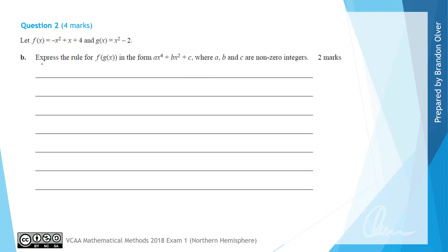For part b we're asked to express the rule for f(g(x)) in the form ax to the power of 4 plus bx squared plus c where a, b and c are non-zero integers. So that means when we have f(g(x)) that's the same as f, and wherever there's x we're going to replace it with x squared subtract 2.